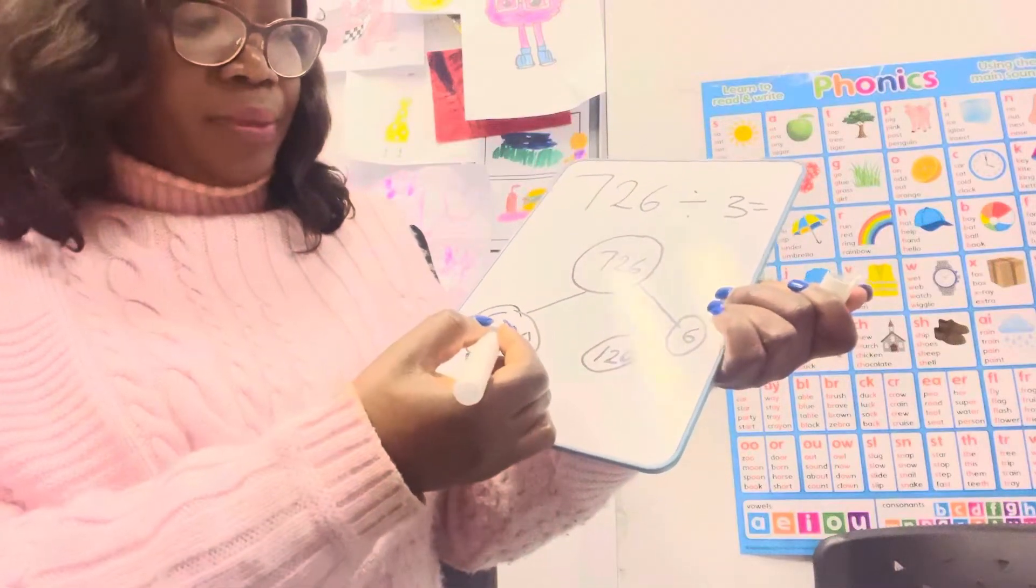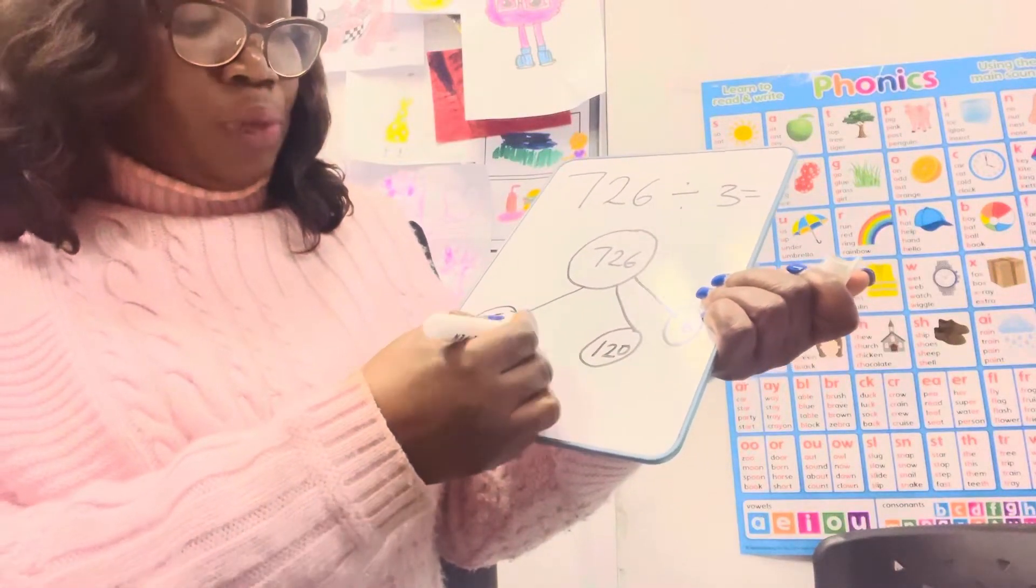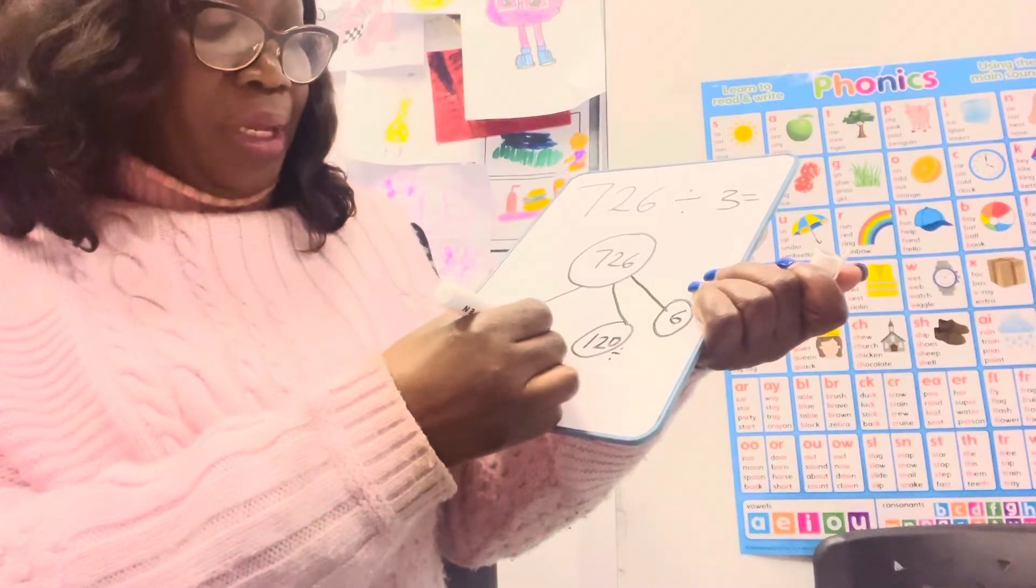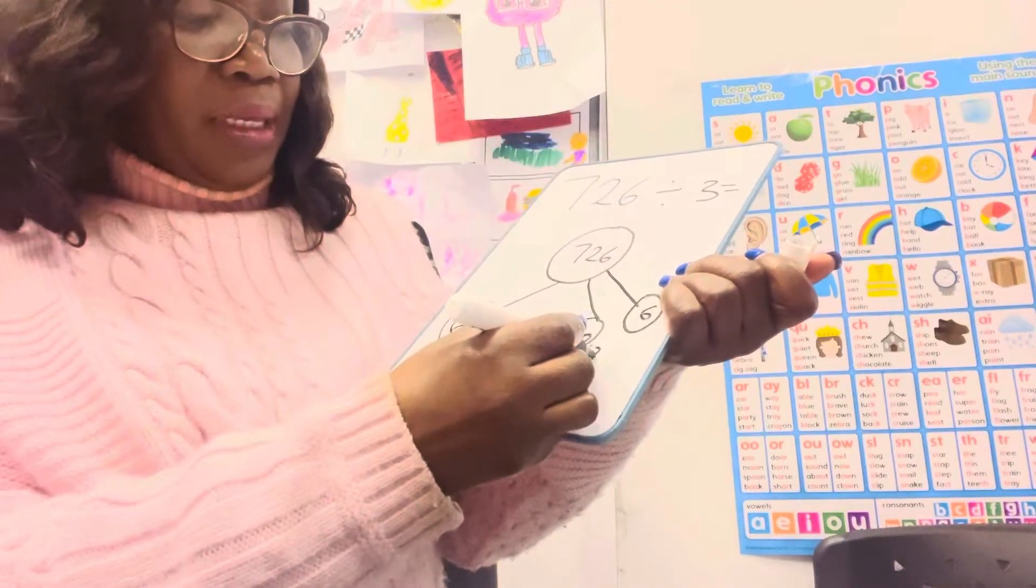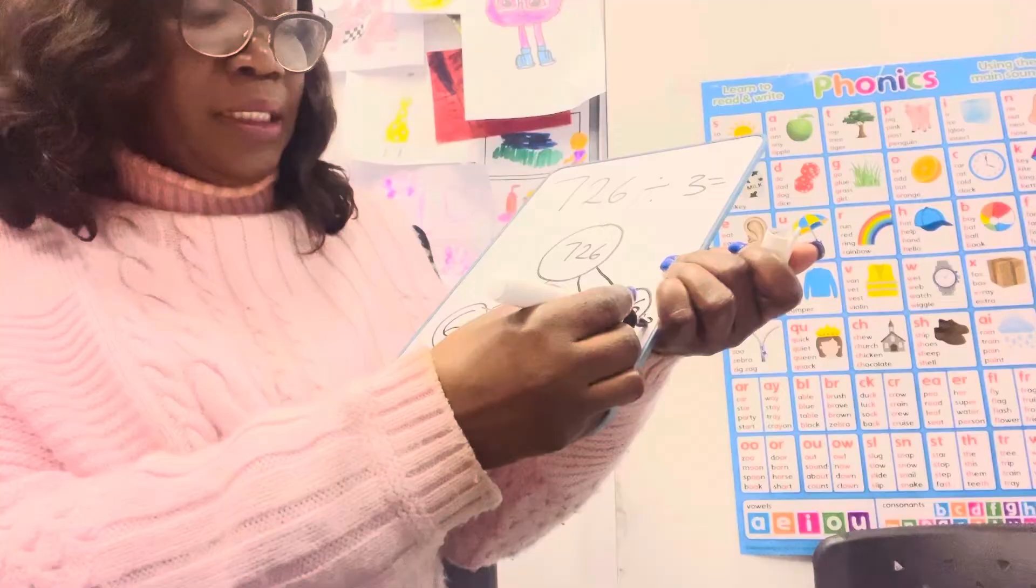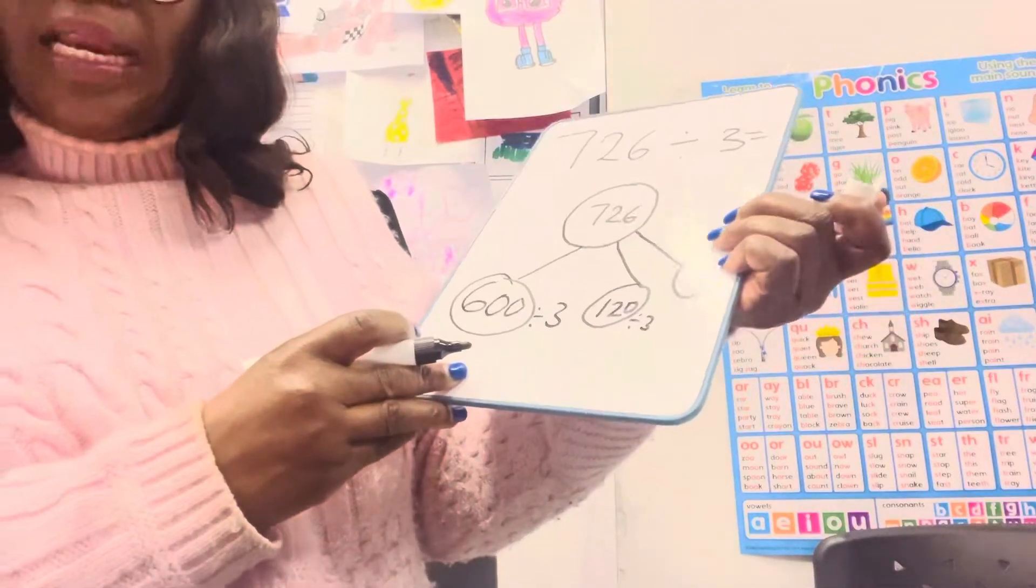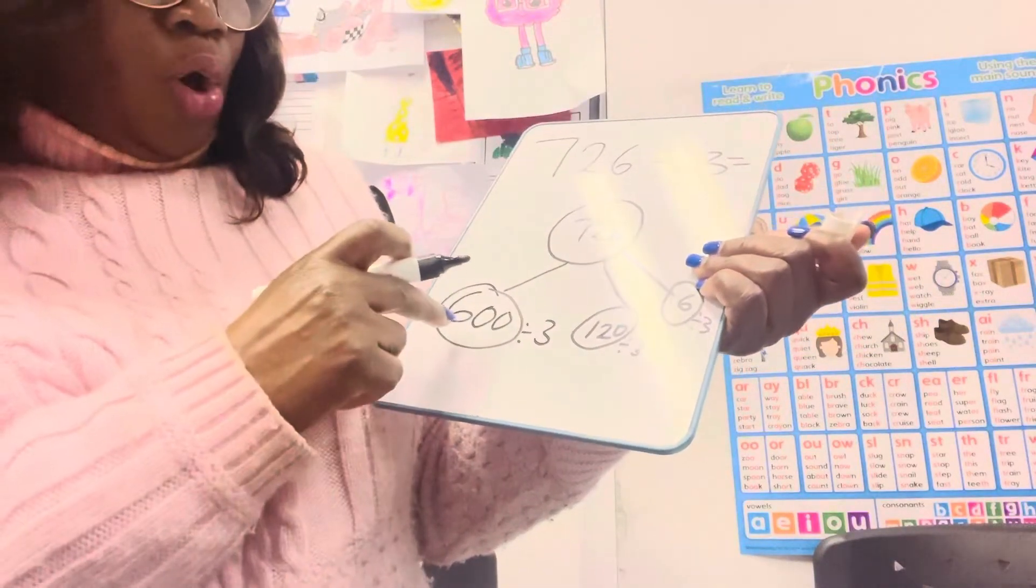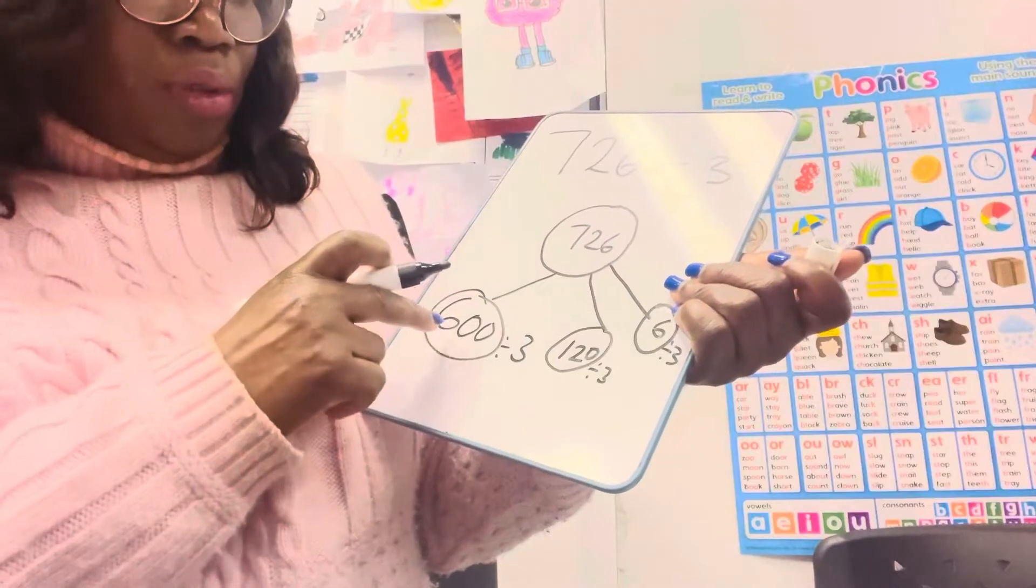So remember, the next step to do is to divide each by 3. We are dividing by 3, each of the split numbers you're dividing it by 3.